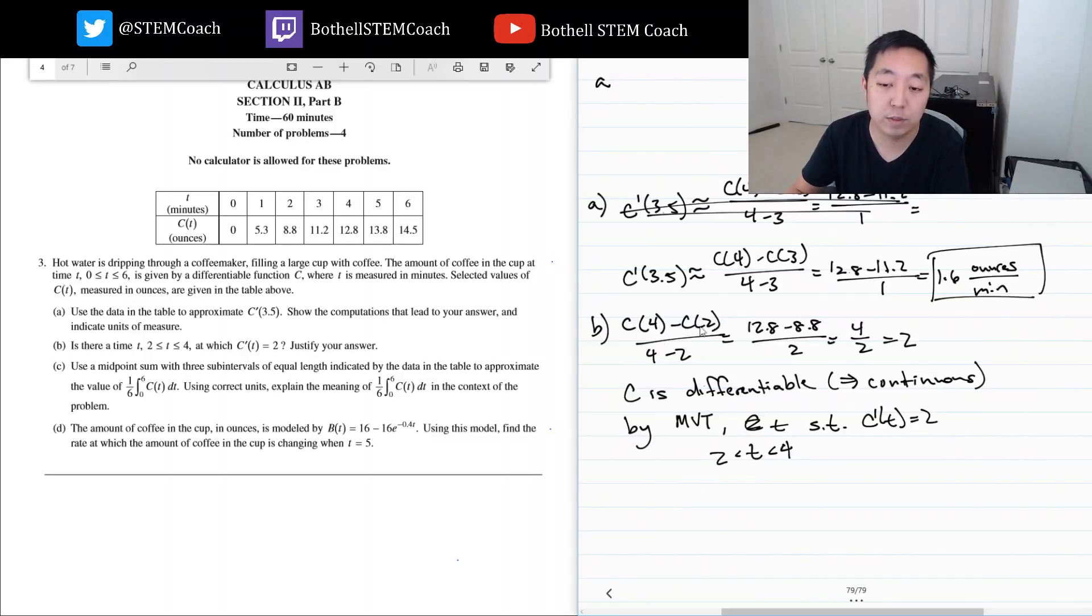Right, so if the average rate of change is basically two over this interval, there must be some instantaneous moment where that slope is also two for differentiable and continuous functions.